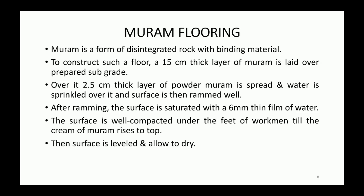The next type is muram flooring. Muram is a form of disintegrated rock with binding materials. To construct it, a 15 cm thick layer of muram is laid over a prepared subgrade. Over it, a 2.5 cm thick layer of powder muram is spread, water is sprinkled, and the surface is rammed well. After that, the surface is saturated with water and compacted under the feet of workmen until the cream of muram rises to the top. Finally, the surface is leveled and allowed to dry.